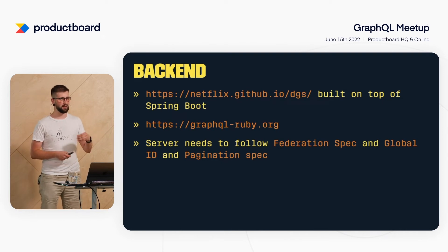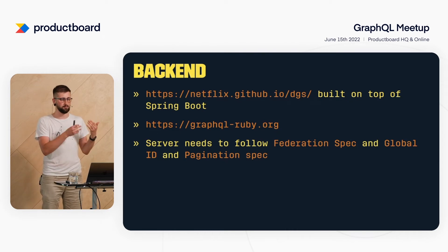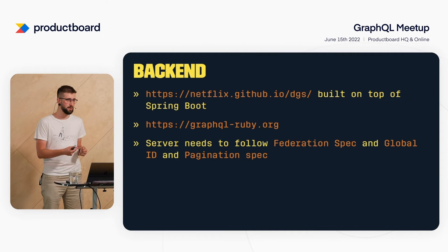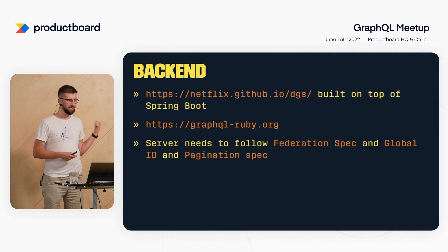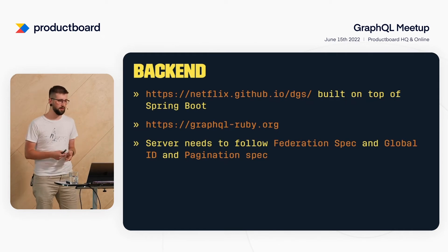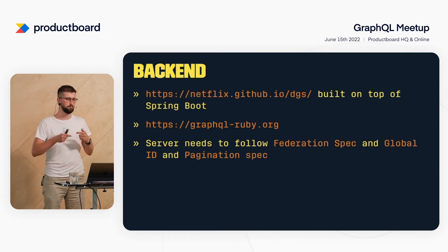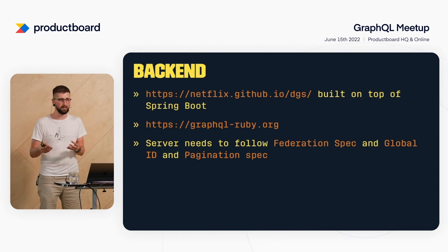On top of that, we made it mandatory that every microservice wanting to join the GraphQL federation or expose some API for our front-end application needs to follow the federation spec, as well as the global ID spec and pagination spec. The important thing is that those specifications are implied on you by Relay itself — since we chose Relay on the front end, we need to follow the backend implementation accordingly.